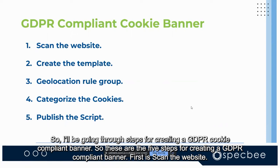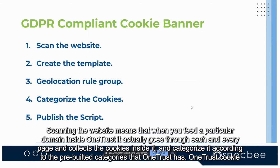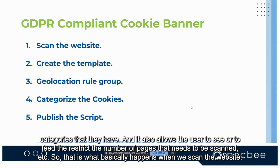I'll be going through the five steps for creating a GDPR compliant banner. The first step is scanning the website — when we feed a particular domain into OneTrust, it goes through each and every page, collects the cookies, and categorizes them according to the pre-built categories that OneTrust has. It also allows users to restrict the number of pages that need to be scanned.